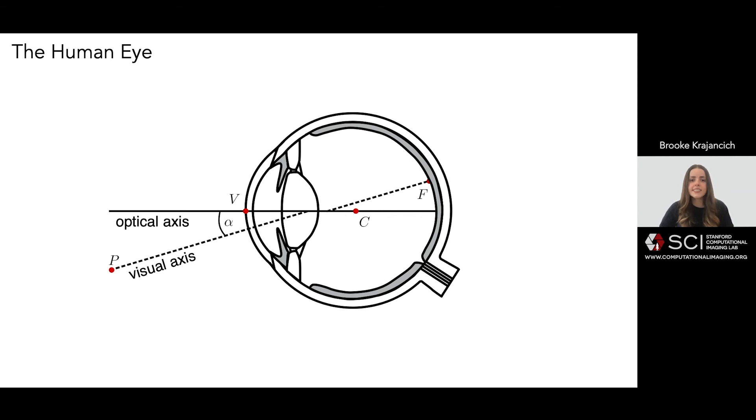These two axes intersect twice, at the front and back nodal points N and N' respectively. These points are not marked by any key anatomical feature, but the front nodal point is understood as the no parallax point of the eye, and is defined by its offset from the center of rotation, the distance NC.